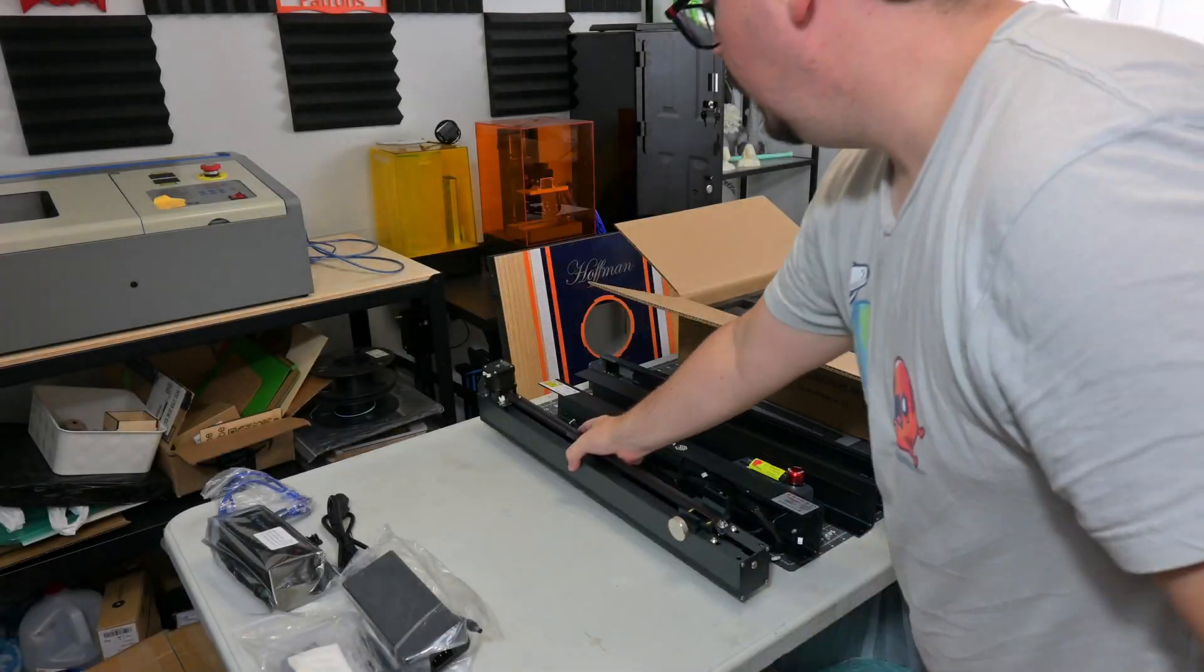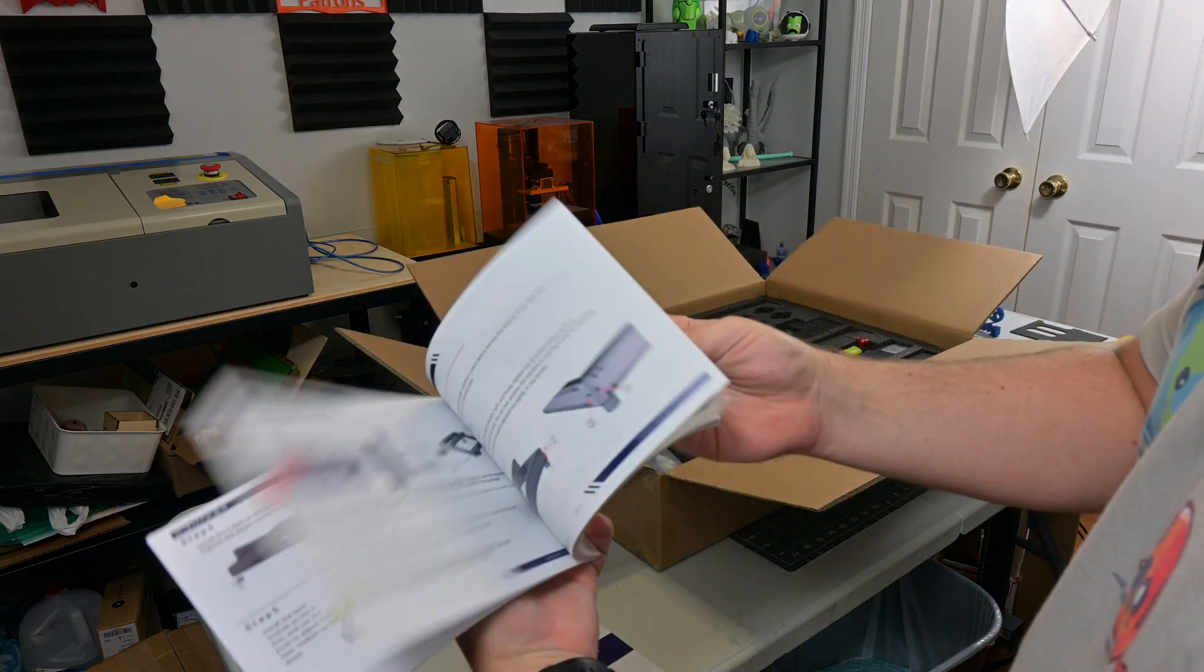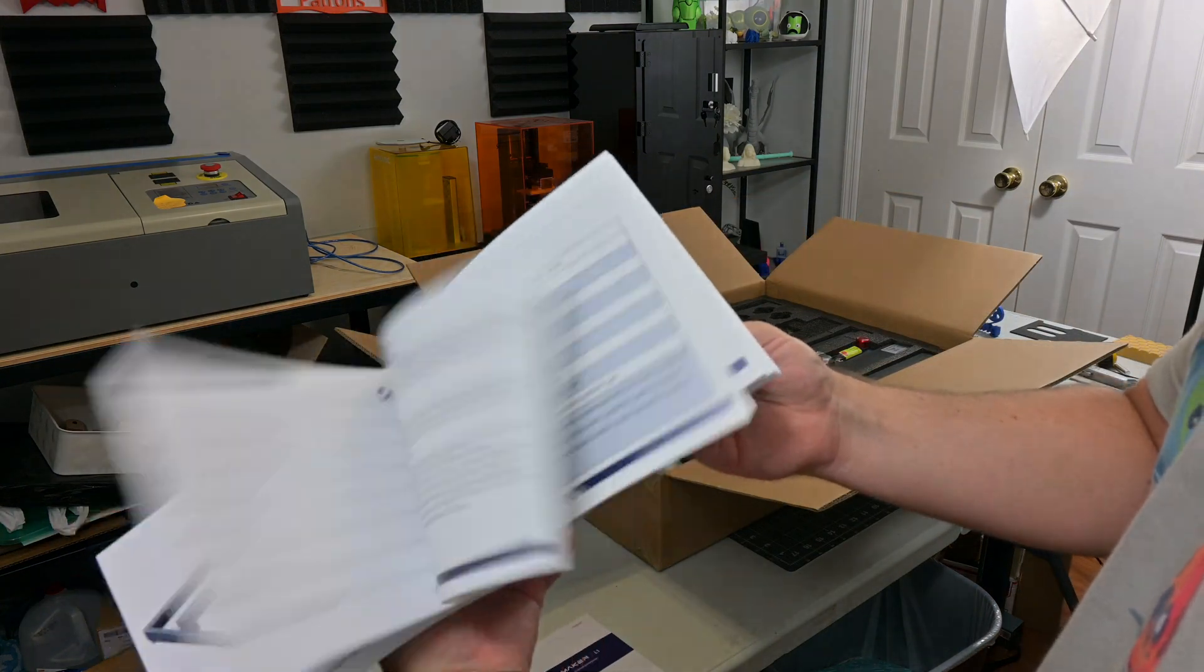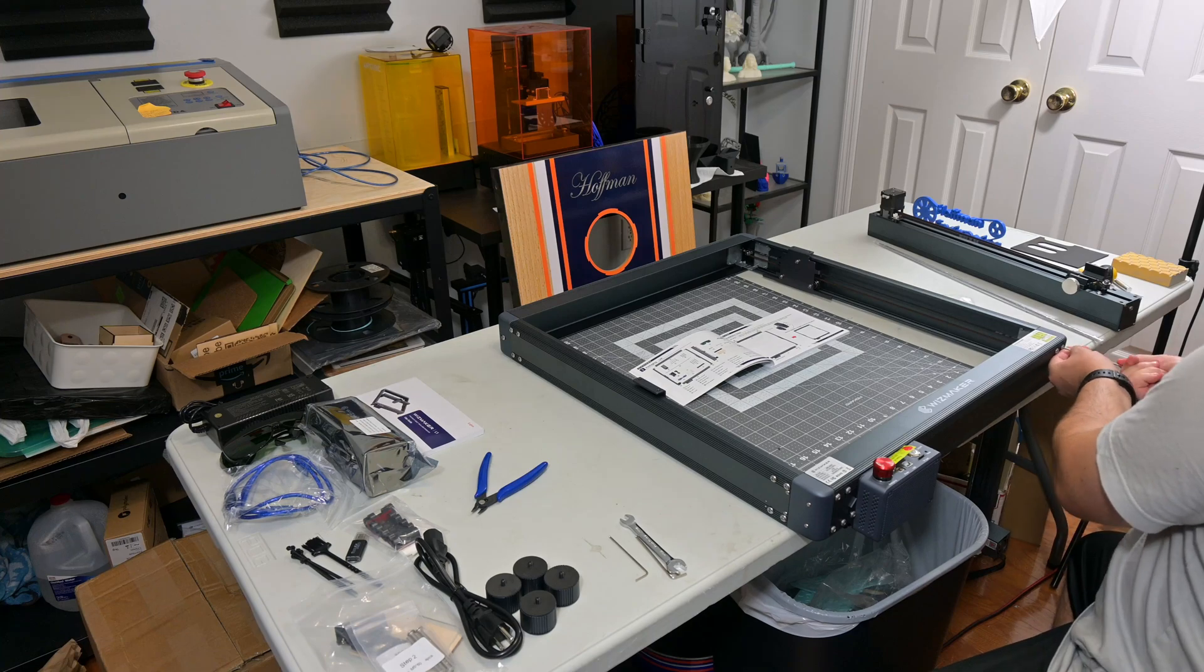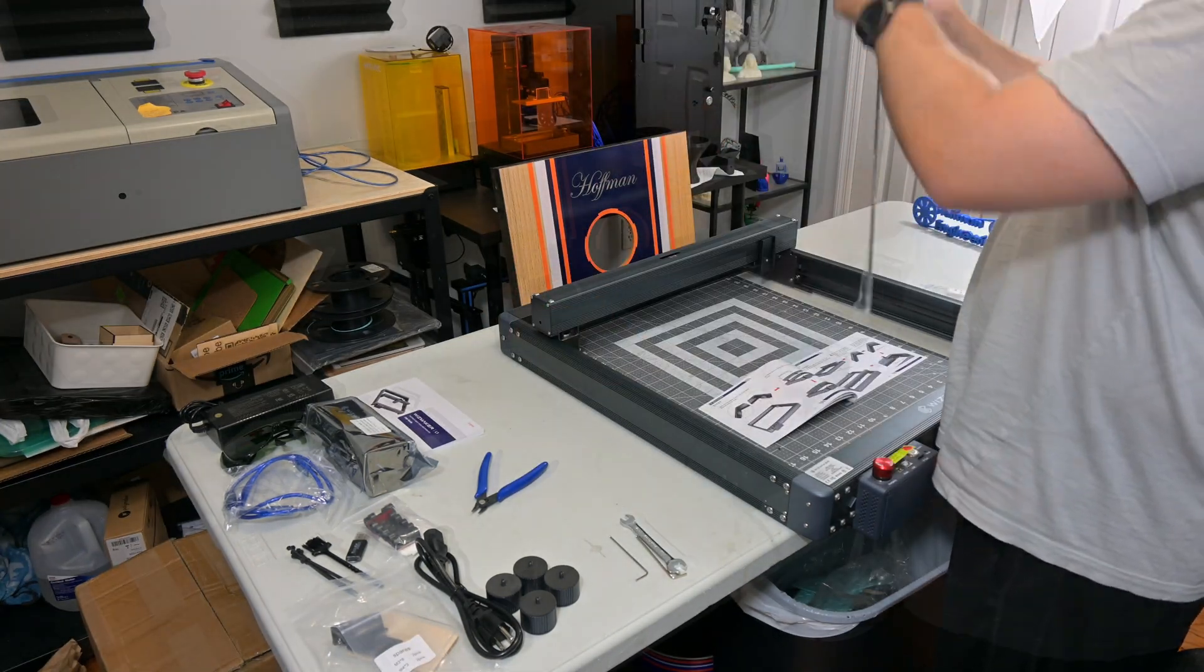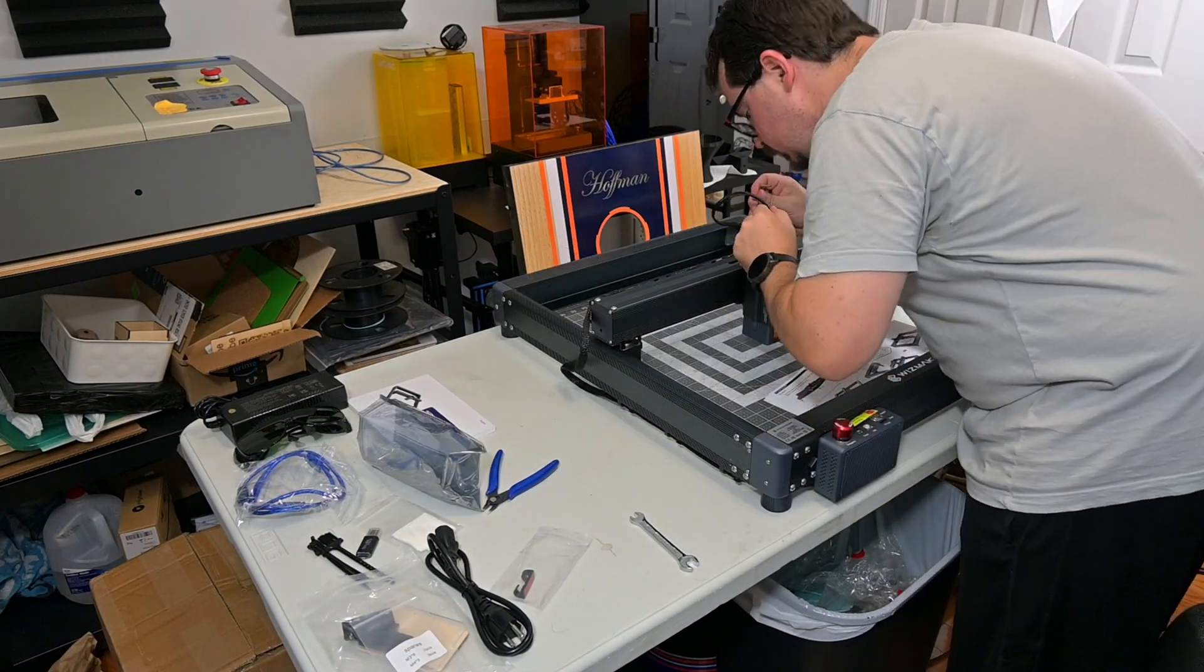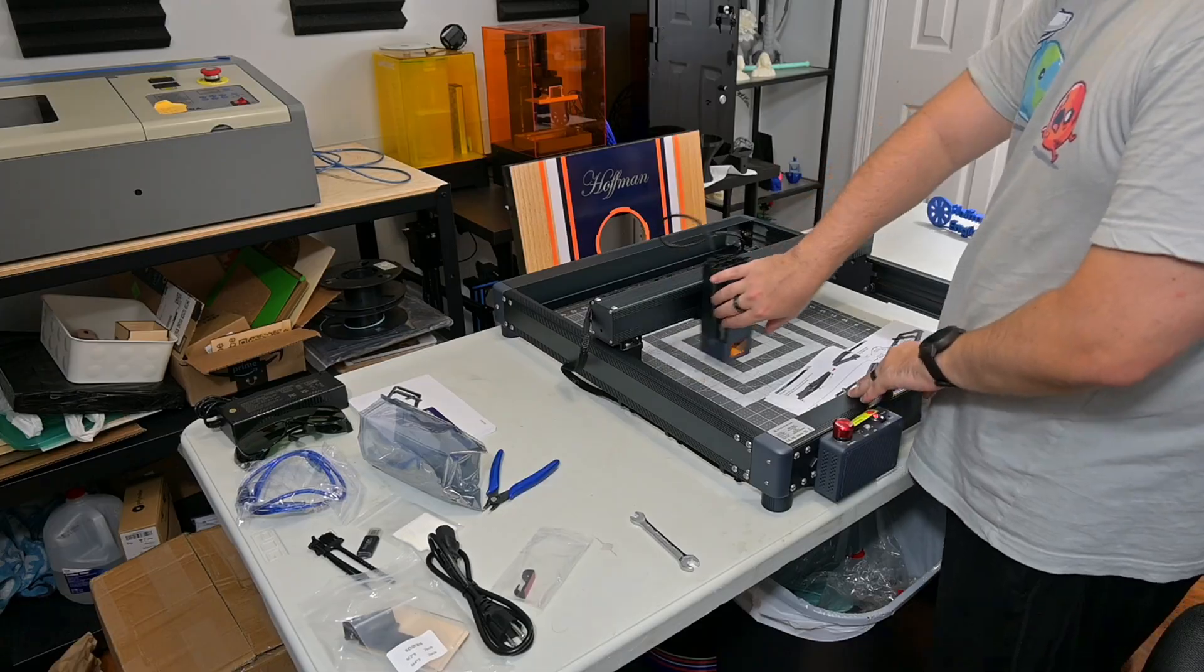The WizMaker L1 comes mostly preassembled, with all of the belts in place and wires nicely wrapped. The included full color instruction manual made the process extremely easy. Assembly is just bolting together the four frame pieces, attaching the X axis, screwing in the feet, sliding in the laser module, and plugging in the wires. It took less than 30 minutes to assemble, and I think anyone would be able to put it together.